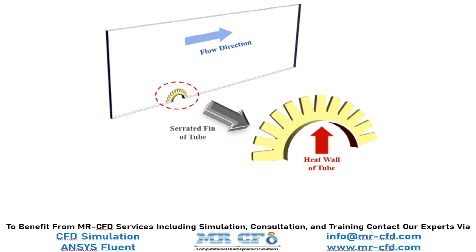The current model is designed in three dimensions using Design Modeler software. The model includes a shallow rectangular area as the spatial domain for free air flow around the serrated fin tube. A tube with fins on its outer wall is defined inside this air flow space. The number of fins is 24, and they are drawn smoothly and without sharp angles. Since the model is exactly symmetrical, the modeling is done using a symmetry boundary condition.